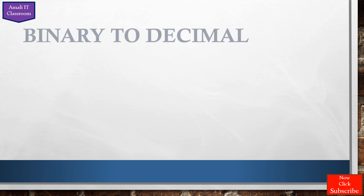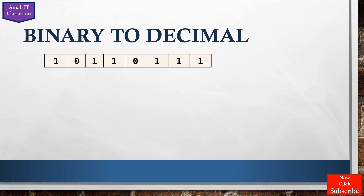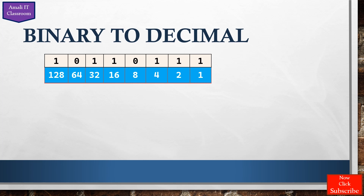For binary to decimal conversion, the example given is 10110011 base 2. Write down the number, and starting from the right side, assign the positional values: 2 to the power 0, 2 to the power 1, 2 to the power 2, 2 to the power 3, 2 to the power 4, 2 to the power 5, 2 to the power 6, and 2 to the power 7. The corresponding values are 1, 2, 4, 8, 16, 32, 64, and 128.